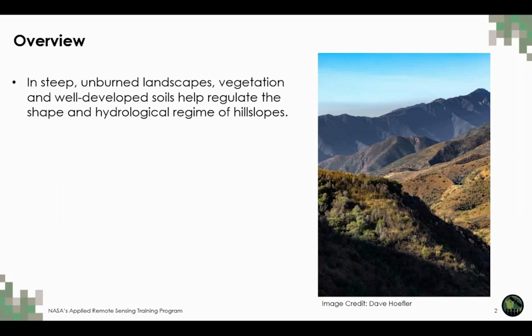To give a brief background: when we think about steep areas where debris flows might occur, they often simply don't occur because unburned landscapes have vegetation that stabilizes these steep slopes, and the soils developing with plant life tend to readily absorb water. Importantly, any loose sediment existing on hill slopes is often physically trapped by the vegetation — you can think of it almost like a dam, where the presence of vegetation acts as a barrier and catches sediment on these steep hill slopes.